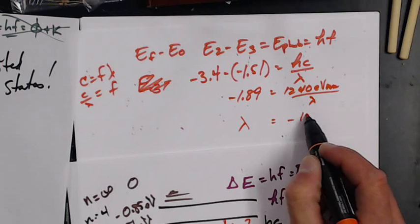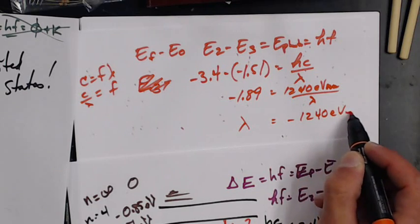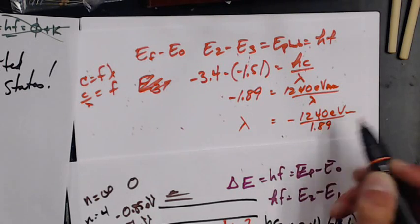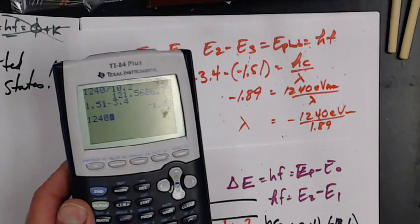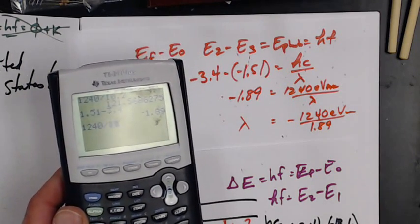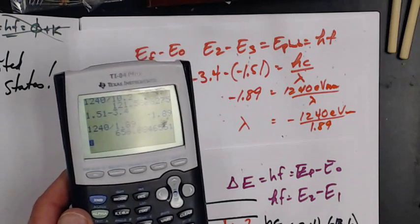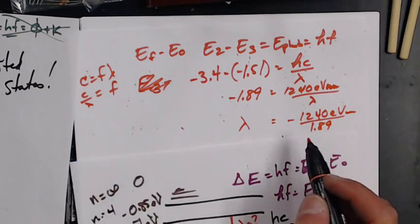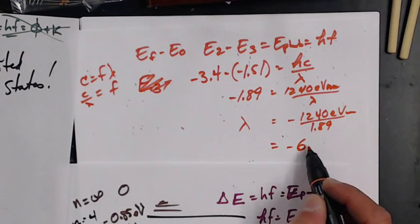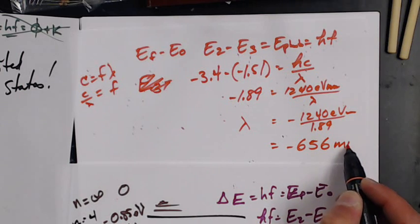Lambda is negative 1240 electron volt nanometers divided by 1.89. 1240 divided by 1.89, 656, so equals negative 656 nanometers.